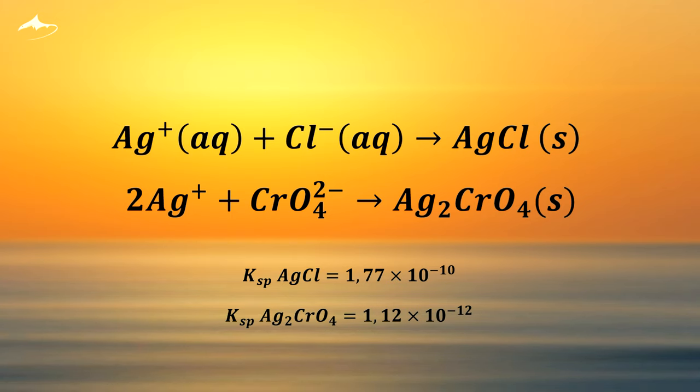It happens in that particular way due to the solubility of each precipitate. Silver chloride is less soluble, which means that chloride reacts with silver first.